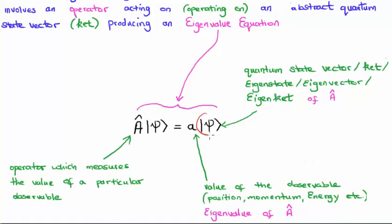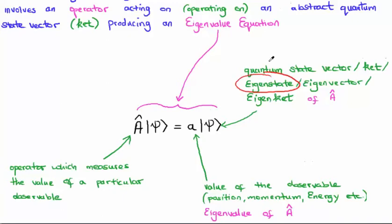Finally, the ket psi has lots of different names depending on who's speaking, all of which mean the same thing. You could call it the quantum state vector, you could call it a ket, you could call it an eigenstate because this is in fact an eigenvalue equation, you could call it an eigenvector, or sometimes people even say an eigen ket. The language can get a bit confusing — personally I prefer eigenstate or ket. Nonetheless we're talking about an eigenvalue equation and that's why we attach the prefix eigen.